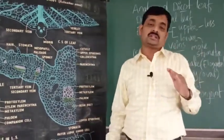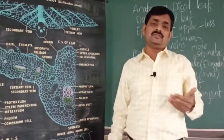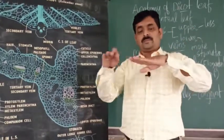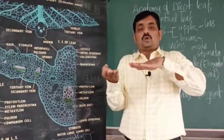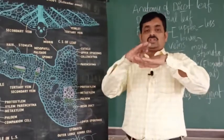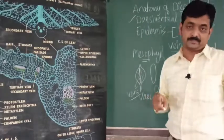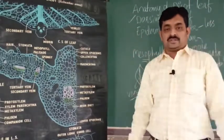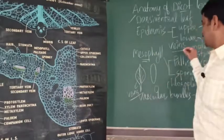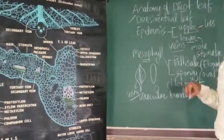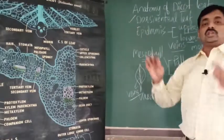To revise: in the section of dicot leaf you can observe upper and lower epidermis. The upper surface is called the dorsal surface and the lower surface is called the ventral surface — they are not the same, so the leaf is called dorsiventral. The stomata are more numerous on the lower epidermis and fewer on the upper epidermis, and they are involved in transpiration.